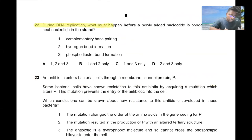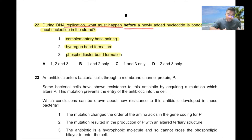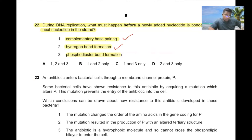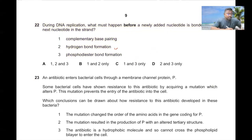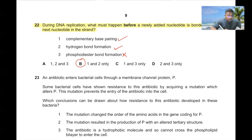Question number twenty-two. During DNA replication, what must happen before a newly added nucleotide is bonded to the next nucleotide in the strand? Complementary base pairing must occur — correct. Hydrogen bond formation must also occur due to complementary base pairing — correct. Phosphodiester bond formation is not necessary before bonding to the next nucleotide. So options 1 and 2 are correct, and B is the correct answer.